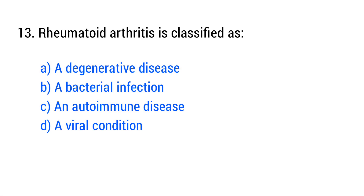Question No. 13. Rheumatoid arthritis is classified as? The right answer is Option C: an autoimmune disease.